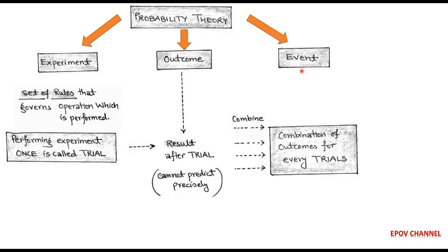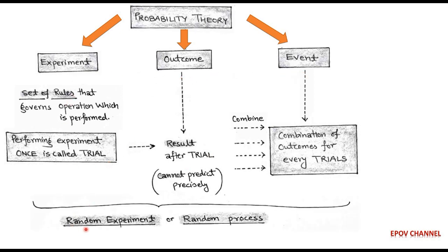In probability theory, for any experiment we get some outcomes, and the combination of outcomes for every trial is called the event of that experiment. This whole process — that is, experiment, outcome, and event — is called a random experiment or random process, because the outcome of every trial cannot be predicted very precisely, hence called a random process.